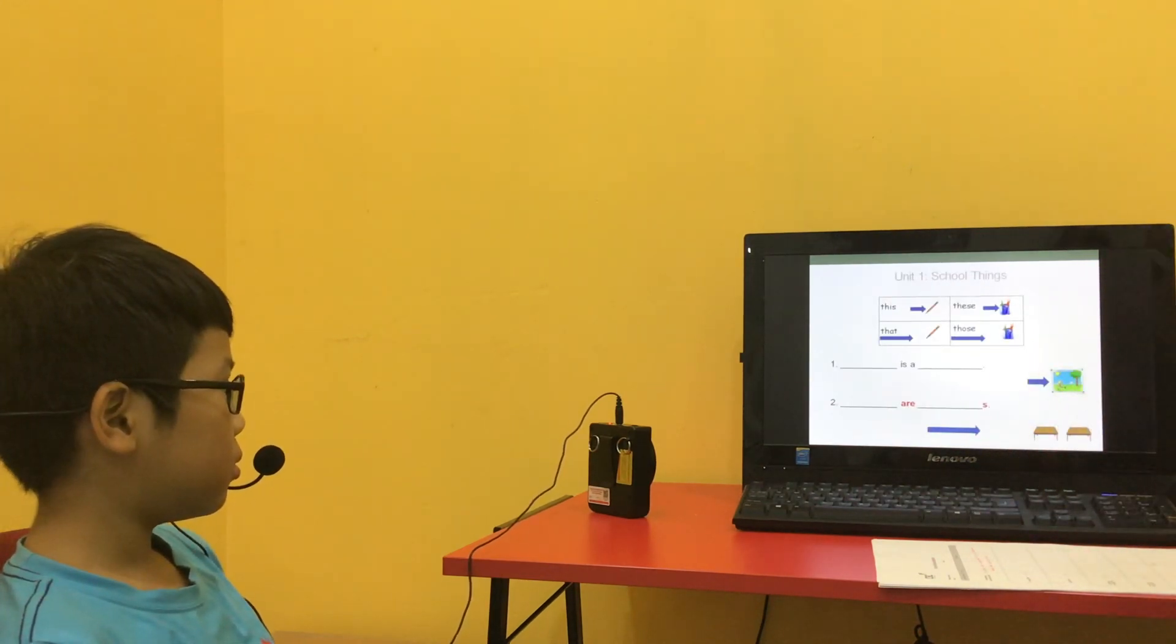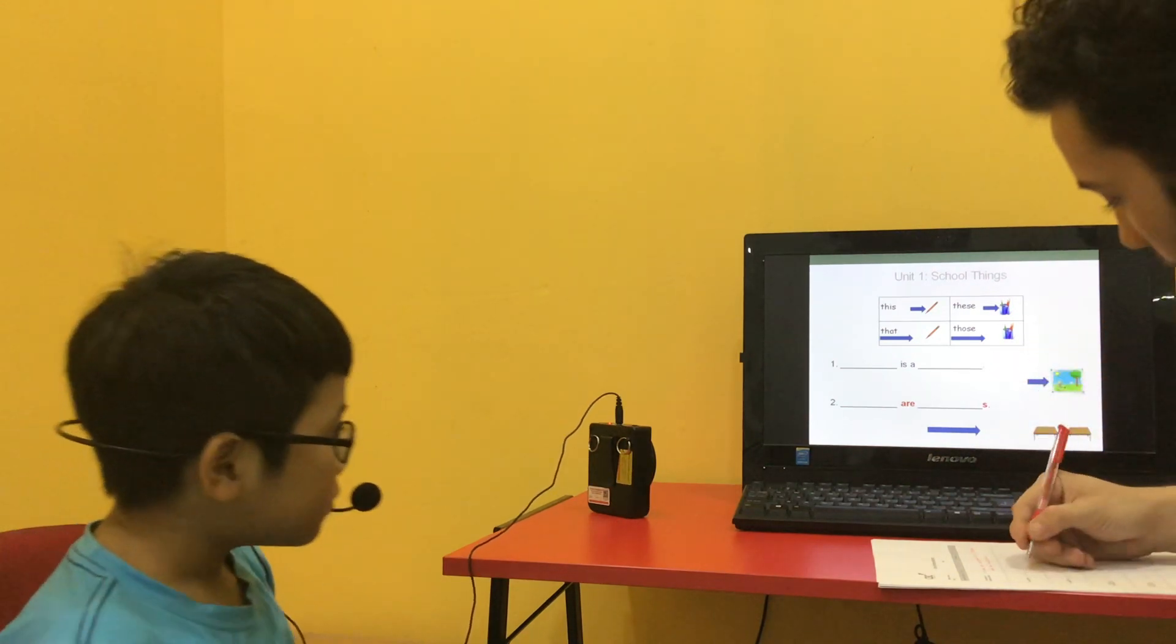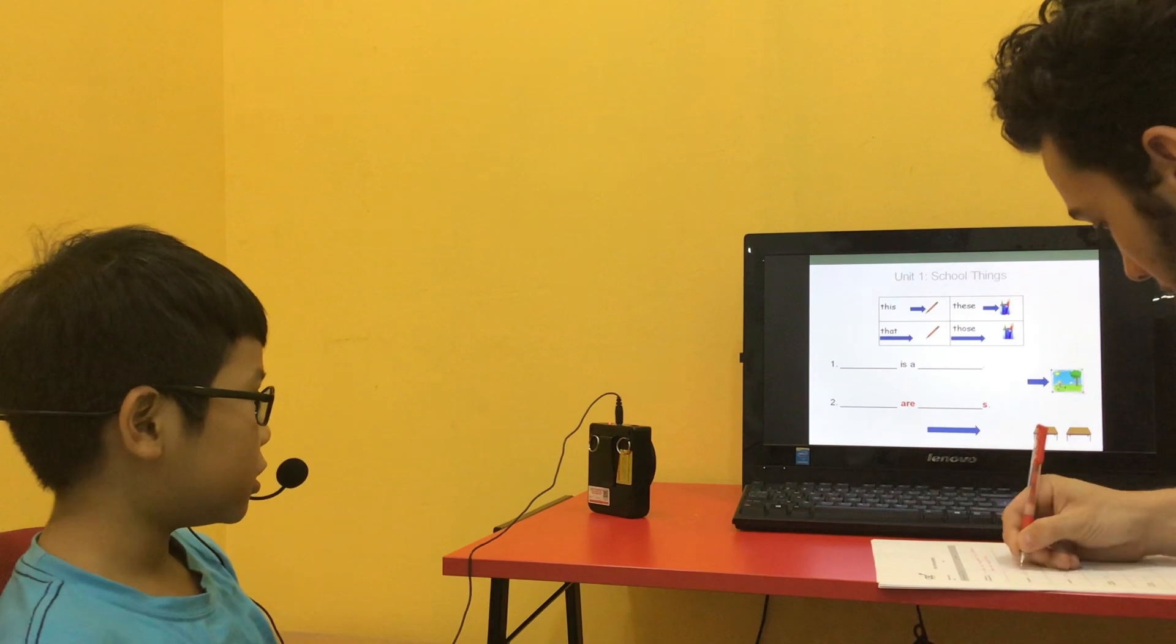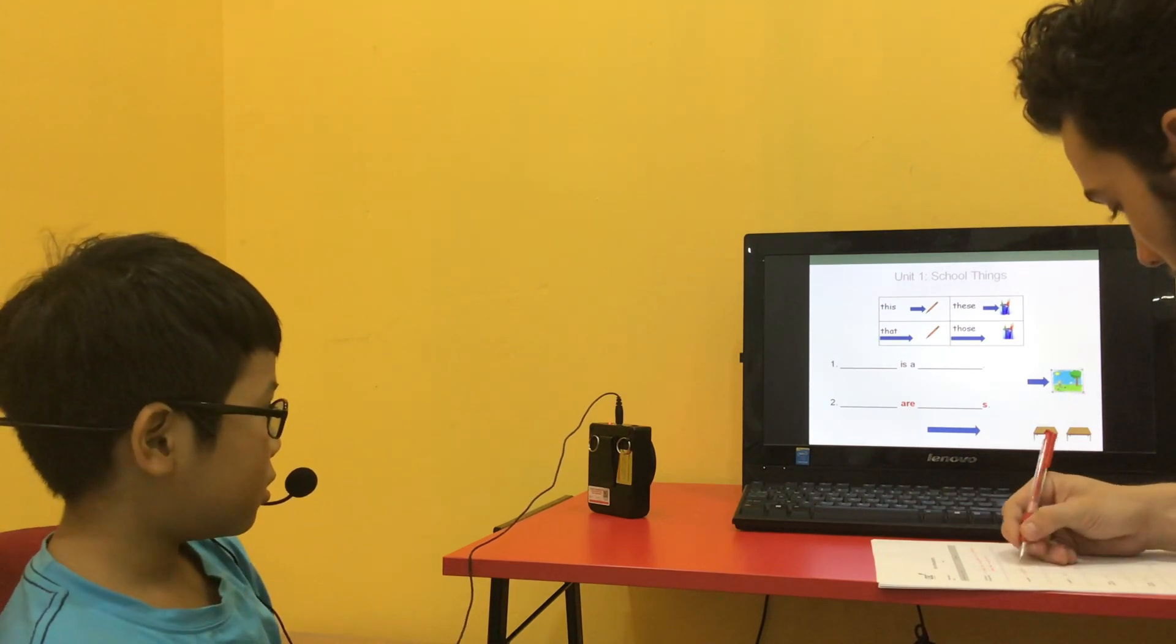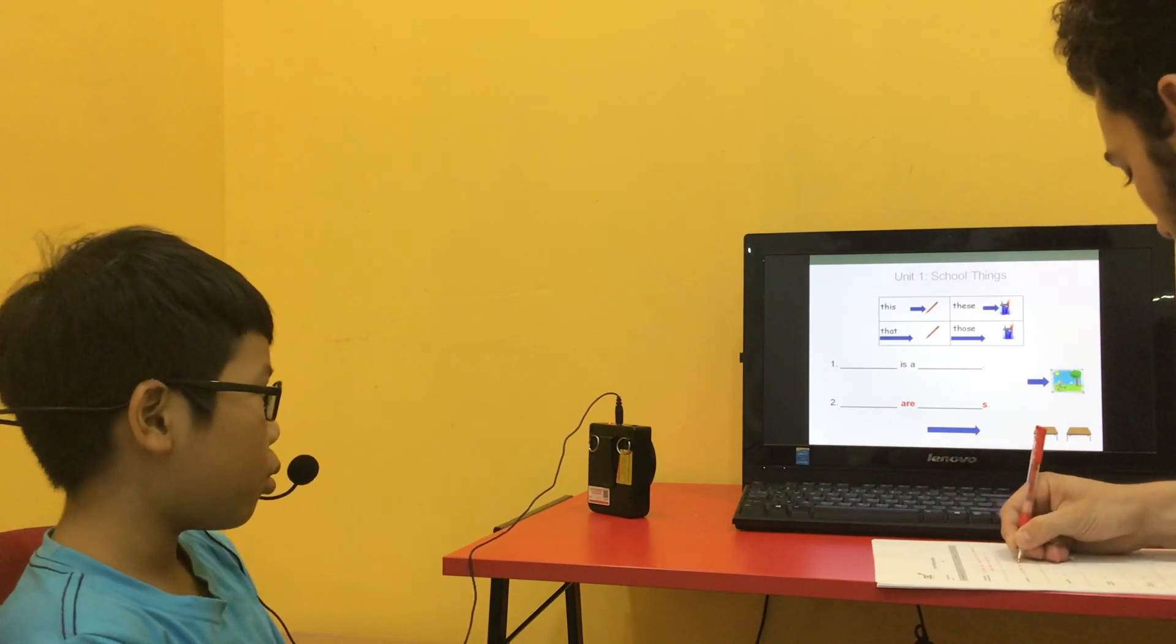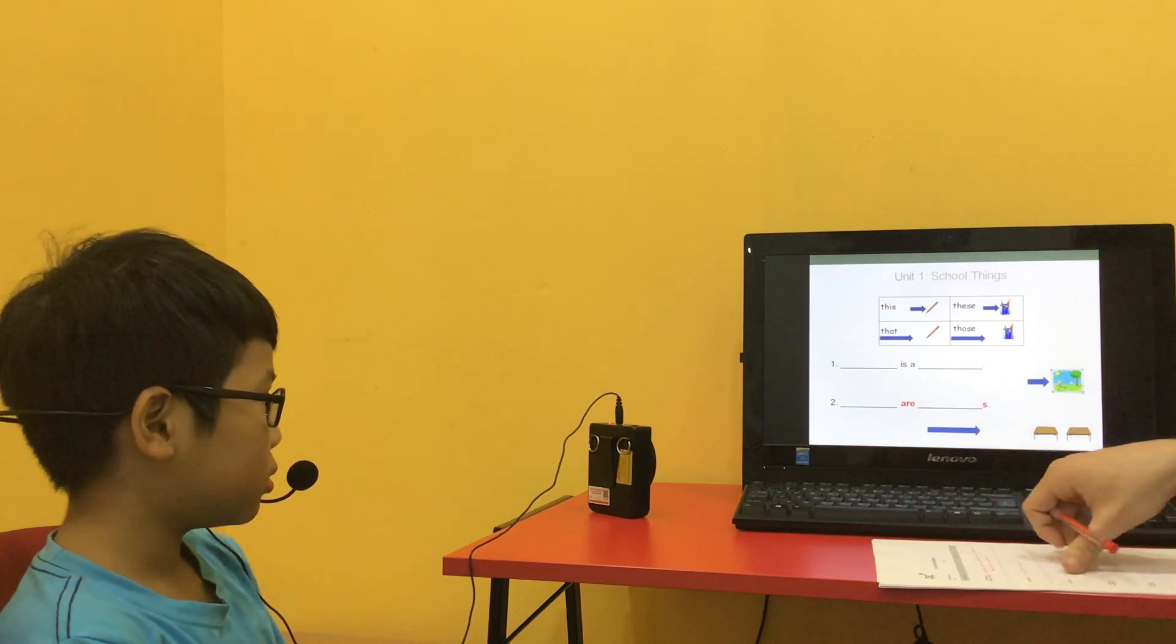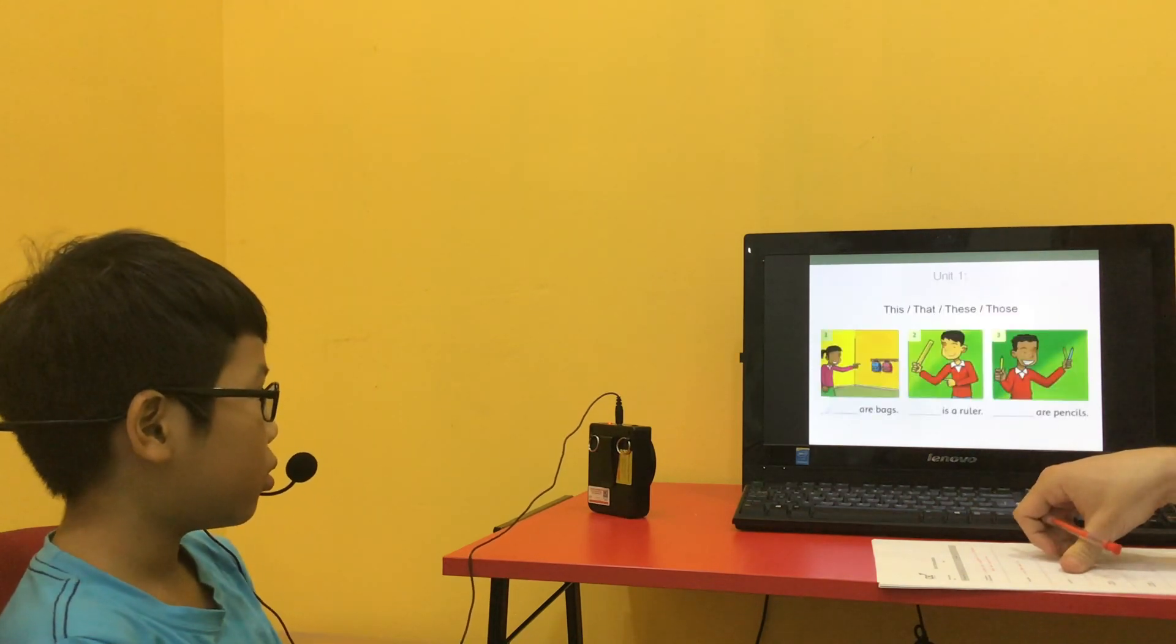We have to use this, these, that, or those. Okay. So what can we say about that? This is the picture. Okay. And number two? There is a table. And number three? So these are tables. These are tables. Okay.